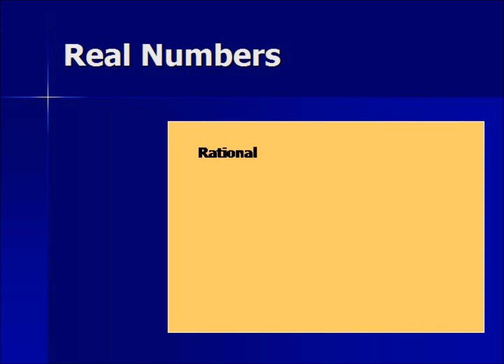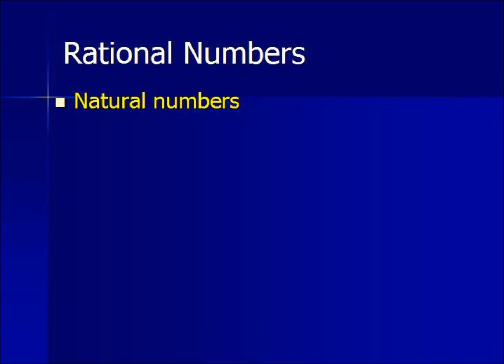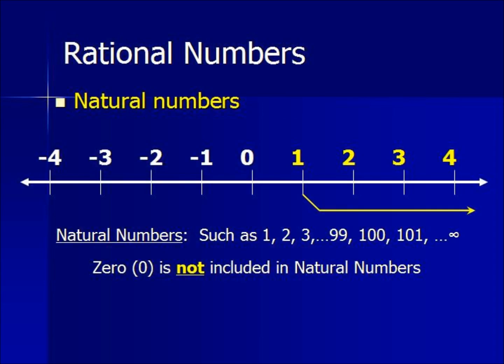We're going to begin with natural numbers, which are a subset of rational numbers. Natural numbers are defined as numbers that begin at 1, going 2, 3, 4 towards positive infinity. Natural numbers do not include 0.